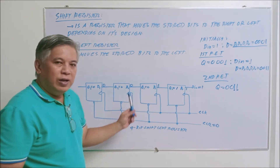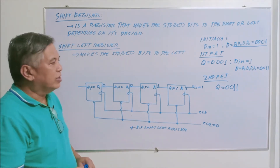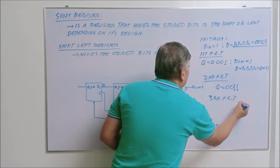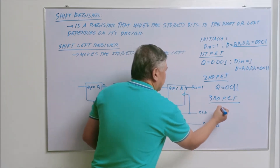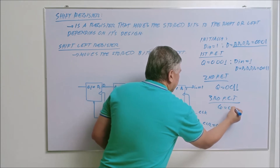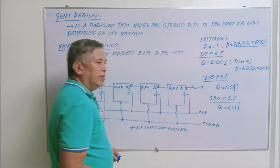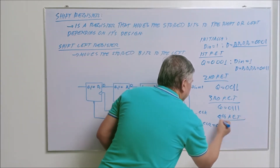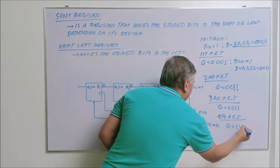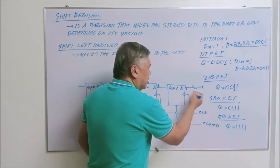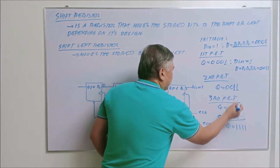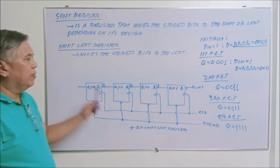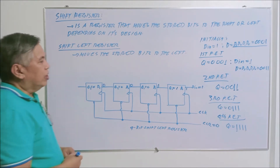On the third positive edge triggering of the clock, as long as the input is still equal to one, Q becomes zero one one one. On the fourth positive edge triggering of the clock, your output Q becomes one one one one, for as long as the input is equal to one. If you notice, the stored bits are moving to the left — that is why we call this the shift left register.